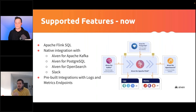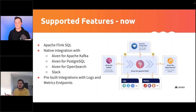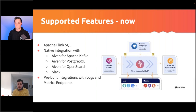Aiven is not a Flink company or a Kafka company — we are a data infrastructure and data company. We've provided native integrations with our other tools that play nicely with Flink: native integration for Apache Kafka, PostgreSQL, OpenSearch, and Slack — to showcase an end-to-end case where alerts end up in a third-party tool. We also have pre-built integrations with your favorite logs and metrics endpoints so you can monitor your service.